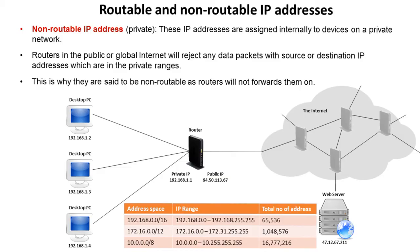Routers on the public or global internet will reject any data packets with a source or destination IP address that is in the private range, and this is why they're said to be non-routable — routers will not forward them on.